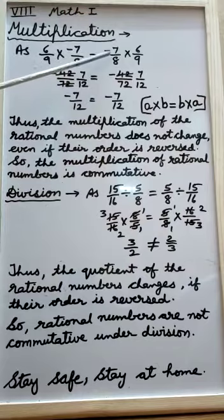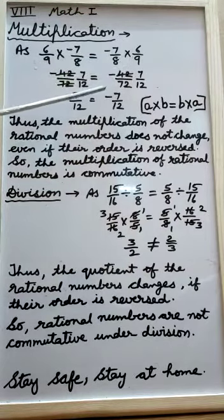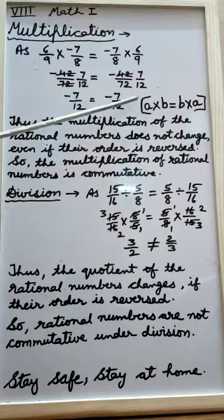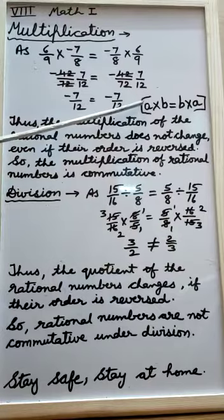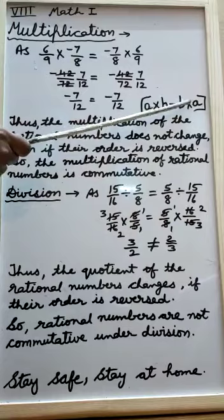minus 7 upon 8 is multiplied by 6 upon 9 also gives us same answer minus 7 upon 12. So, in rational numbers, a into b is equal to b into a.